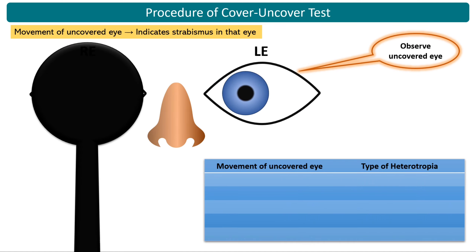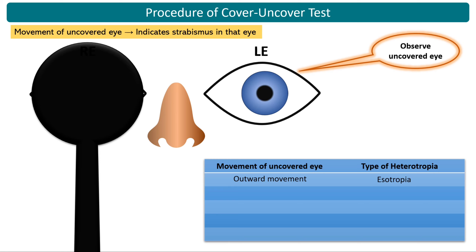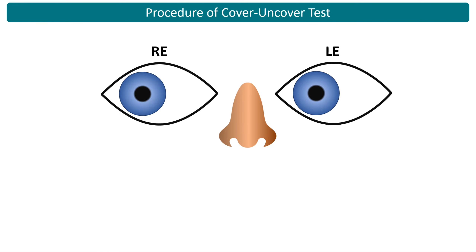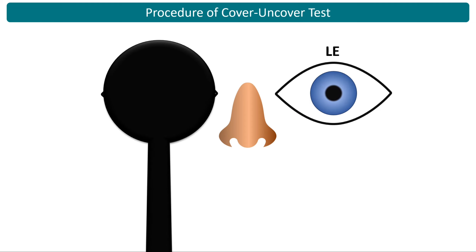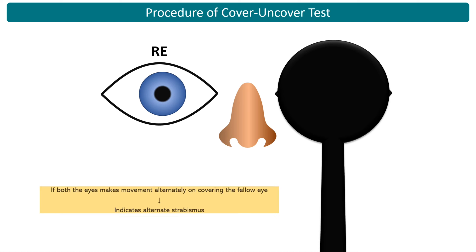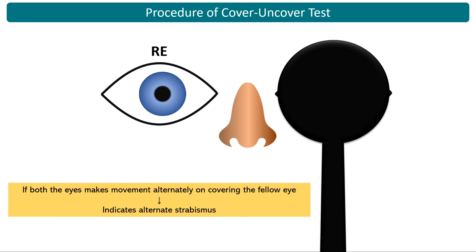Cover the right eye, observe the left eye, and repeat 2 to 3 times. If the left eye moves outward on covering the right eye, it is left esotropia. Inward movement is left exotropia. Upward movement is left hypotropia, and downward movement is left hypertropia. If the left eye makes no movement, there is no strabismus in the left eye. If both eyes make movement alternately when the fellow eye is covered, this indicates alternating strabismus.